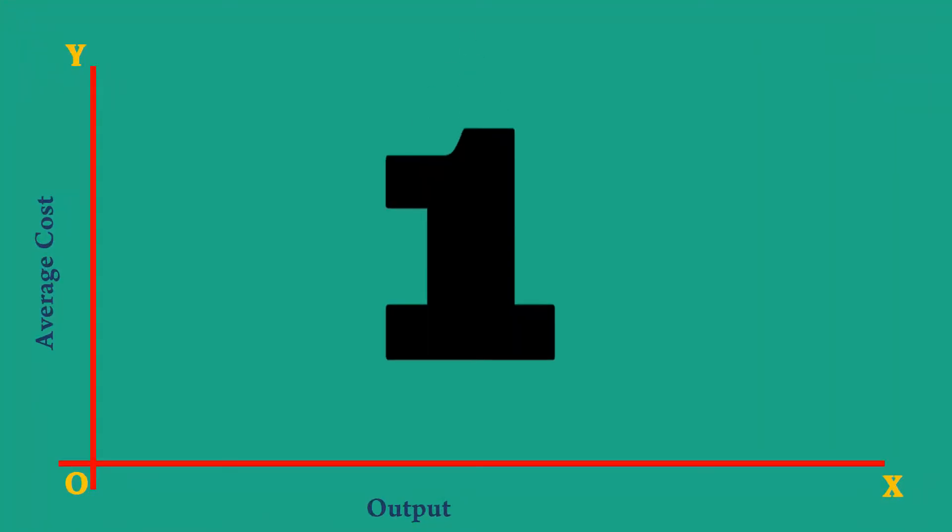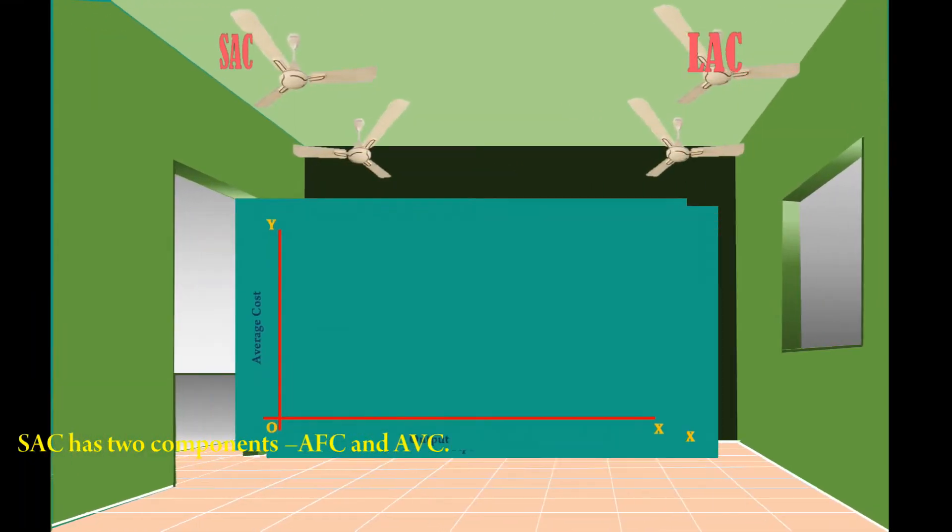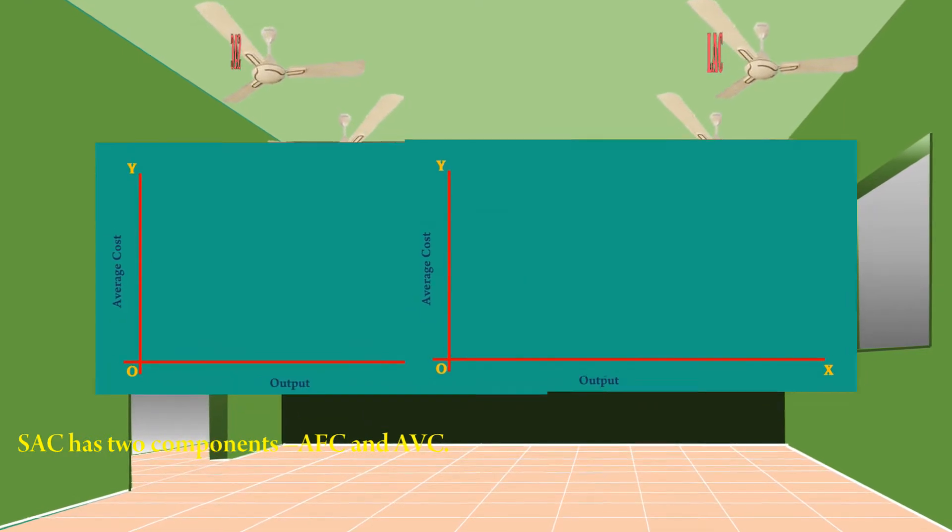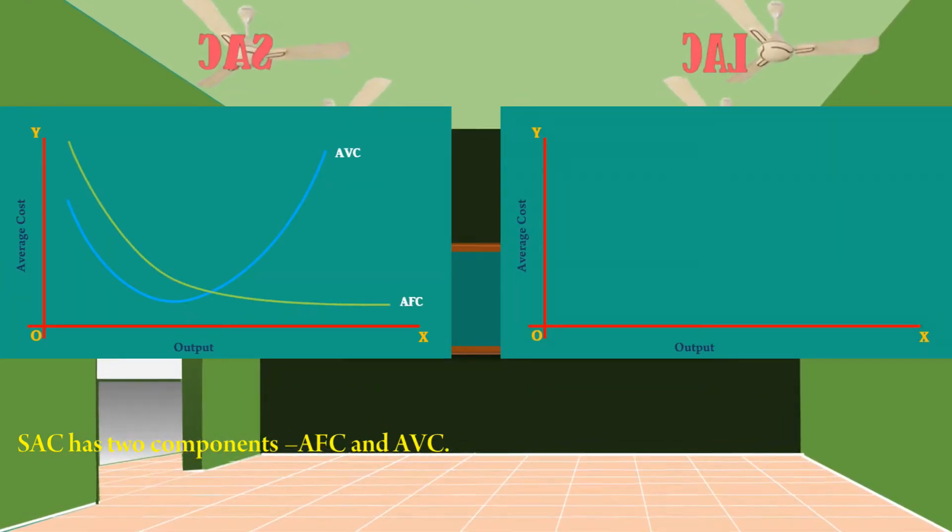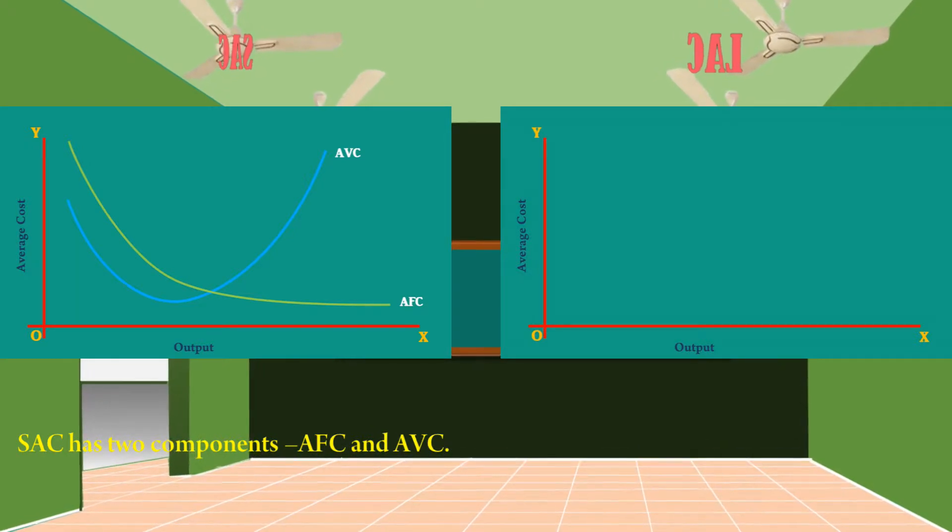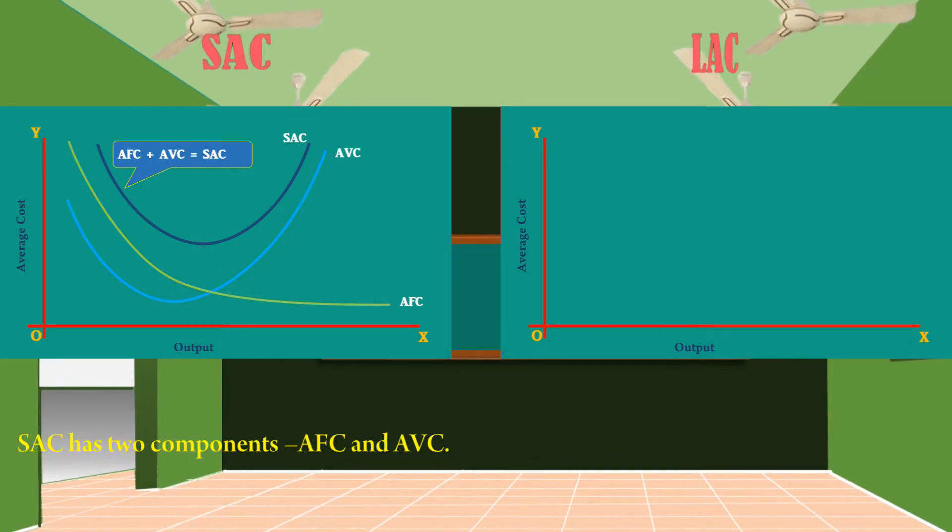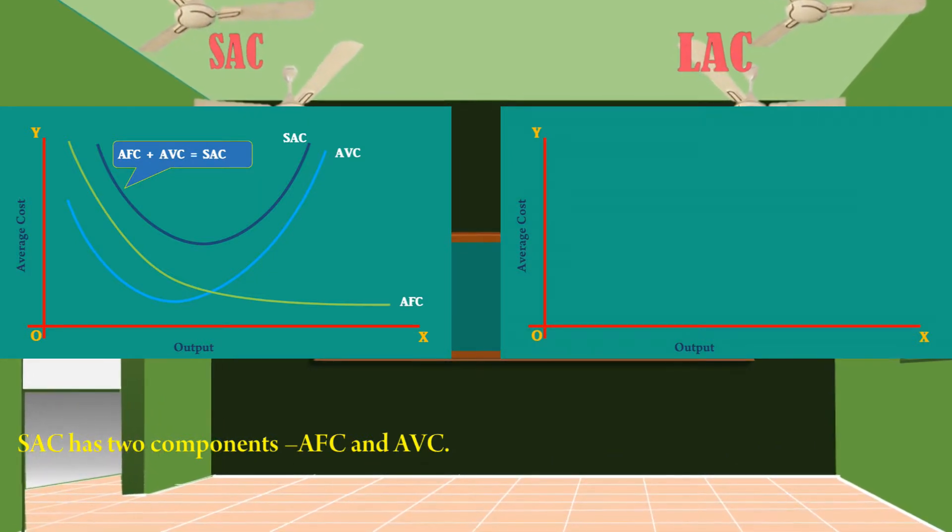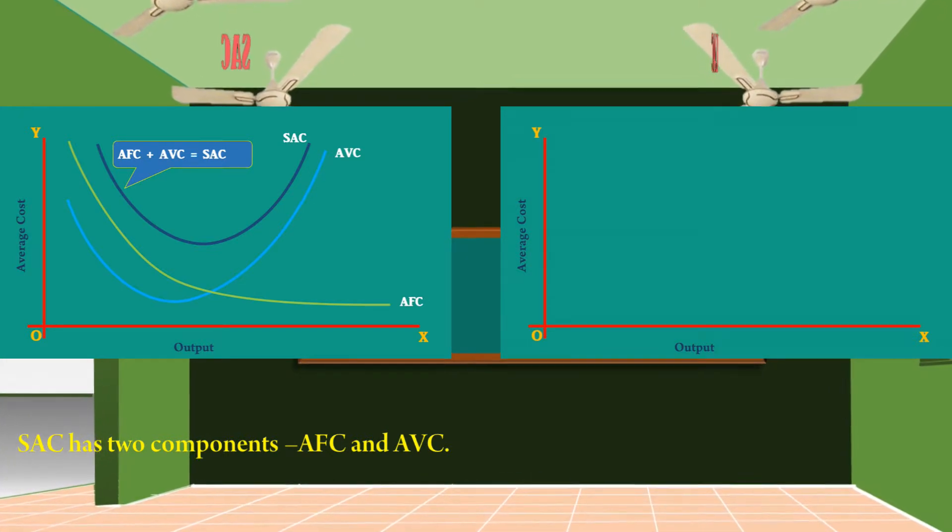1. The short run average cost curve has two components. They are average fixed cost and average variable cost. The vertical addition of average fixed cost curve and average variable cost curve gives the short run average cost curve.